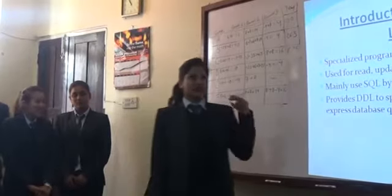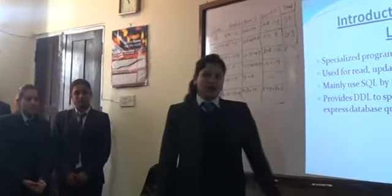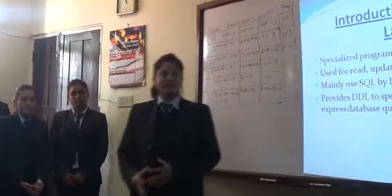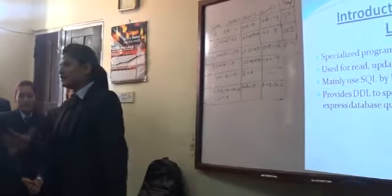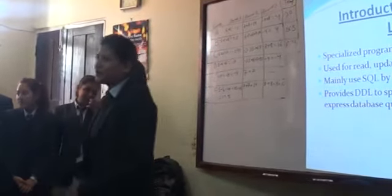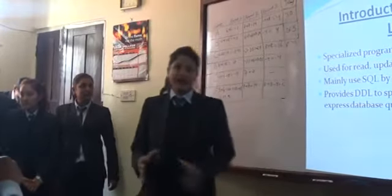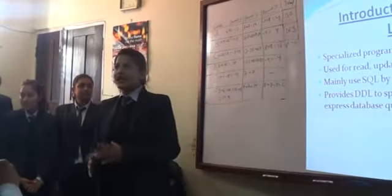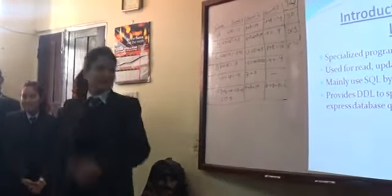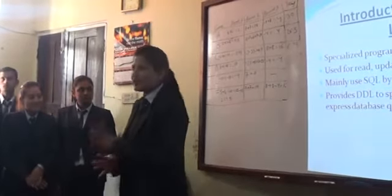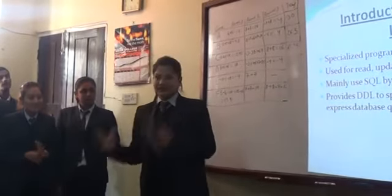There are two database languages: DDL and DML. DDL stands for Data Definition Language and DML stands for Data Manipulation Language. DDL specifies the data schema, and DML expresses the data queries and updates.